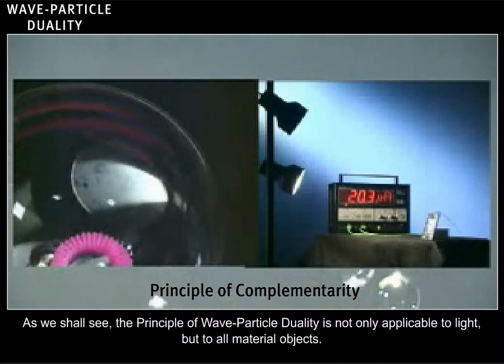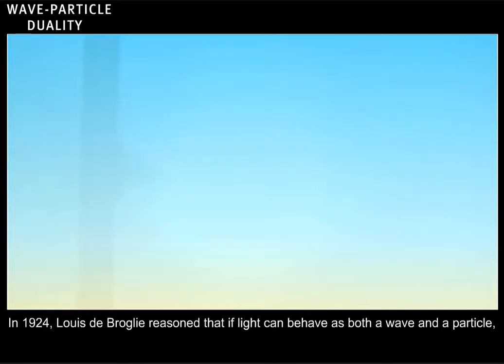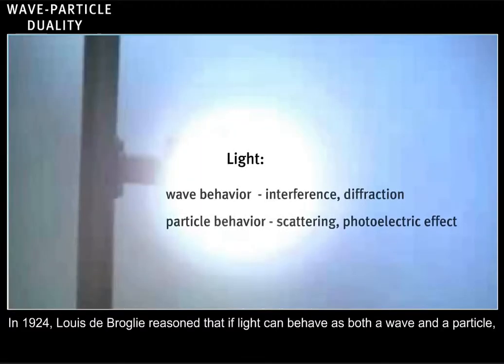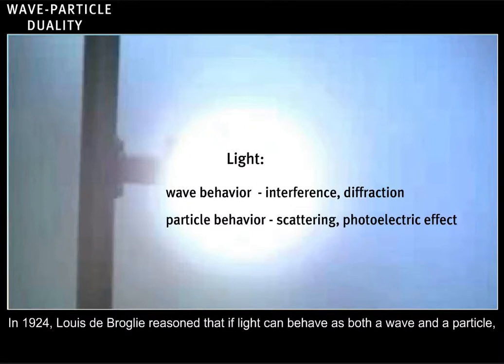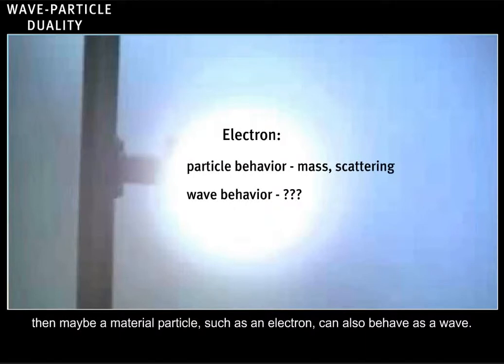As we shall see, the principle of wave-particle duality is not only applicable to light but to all material objects. In 1924, Louis de Broglie reasoned that if light can behave as both a wave and a particle, then maybe a material particle, such as an electron, can also behave as a wave.